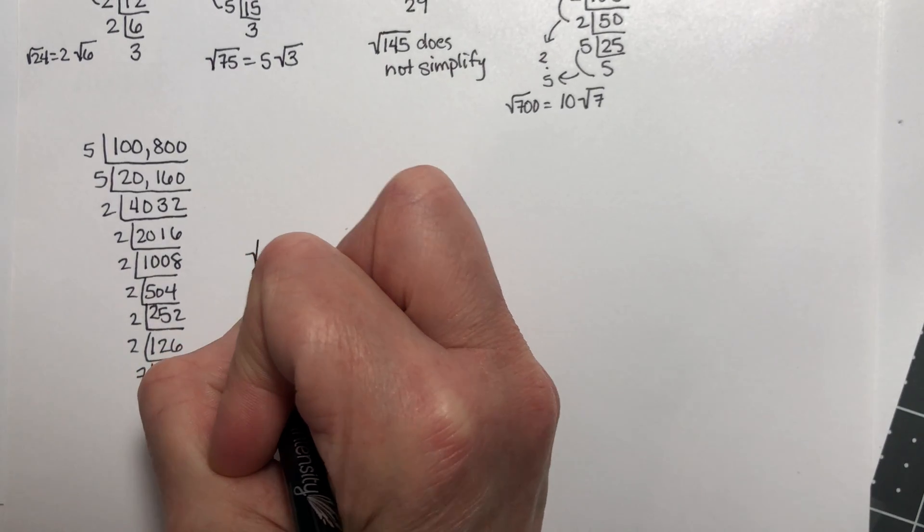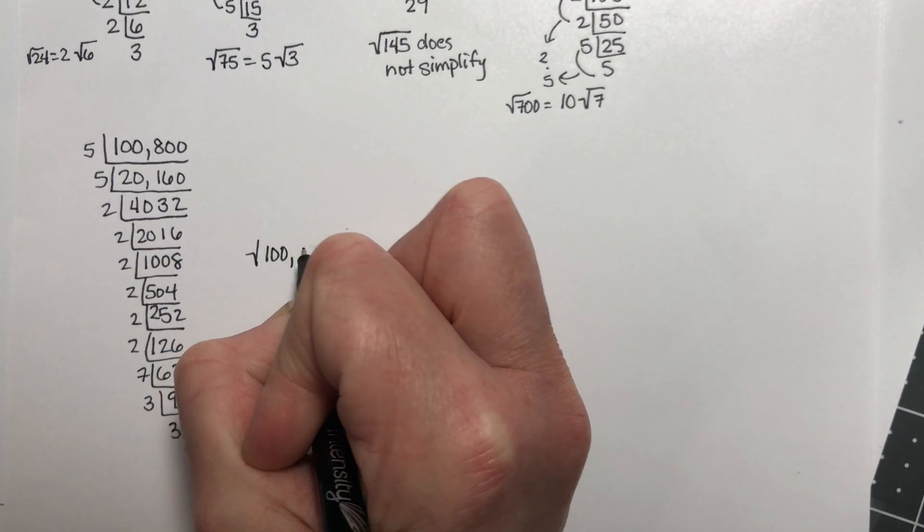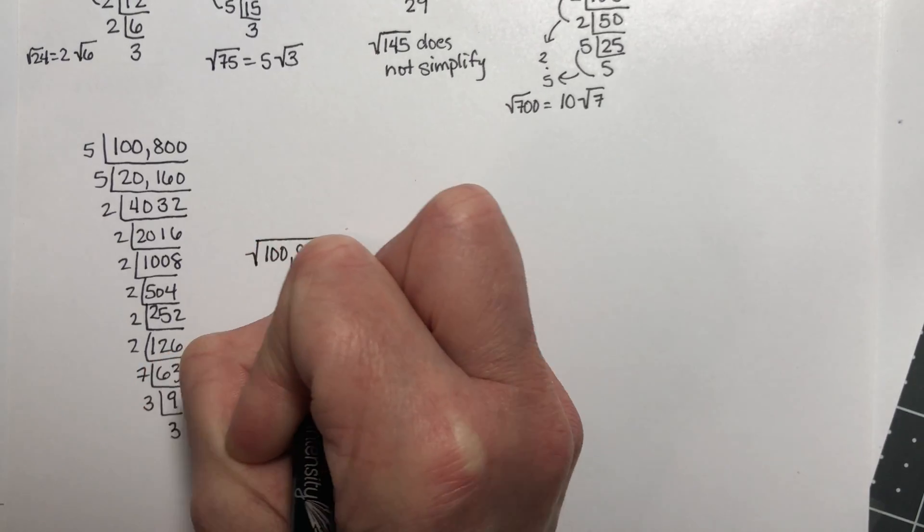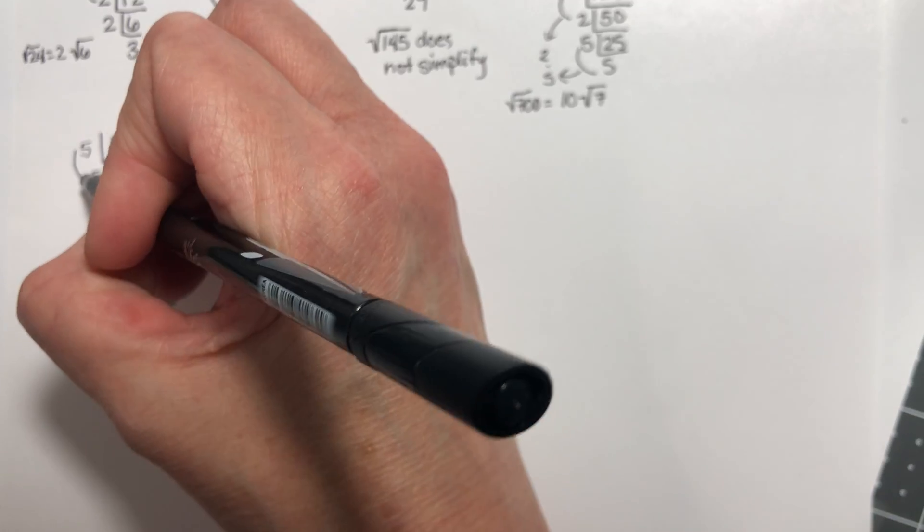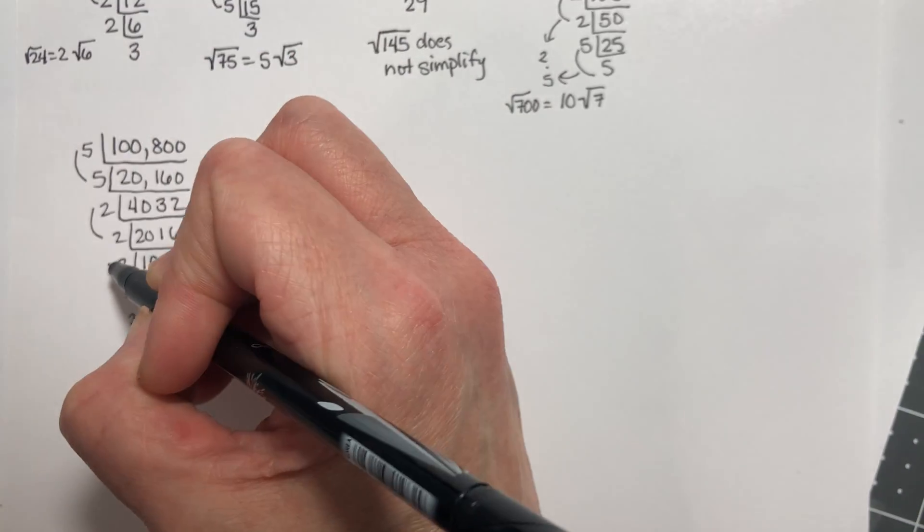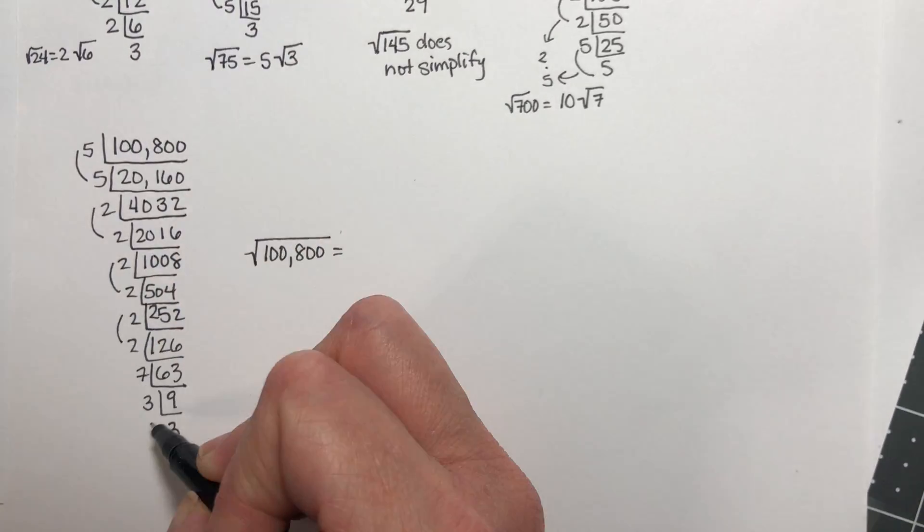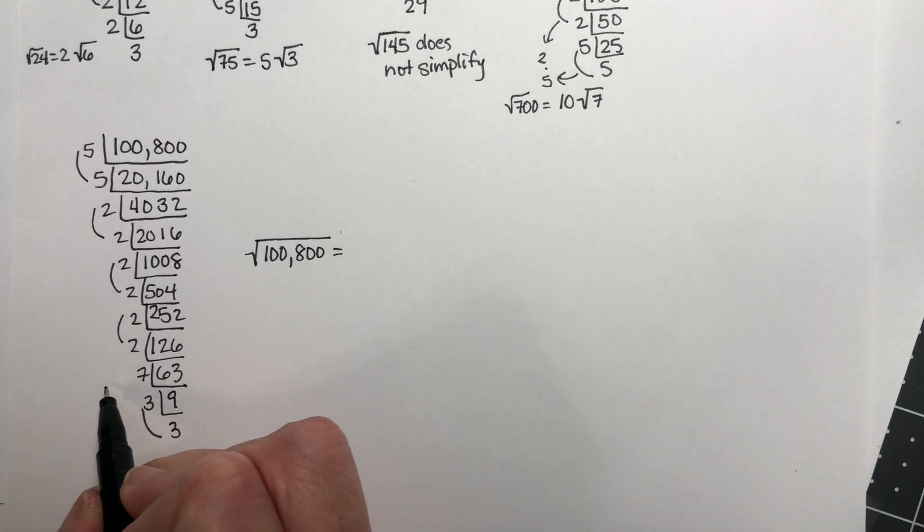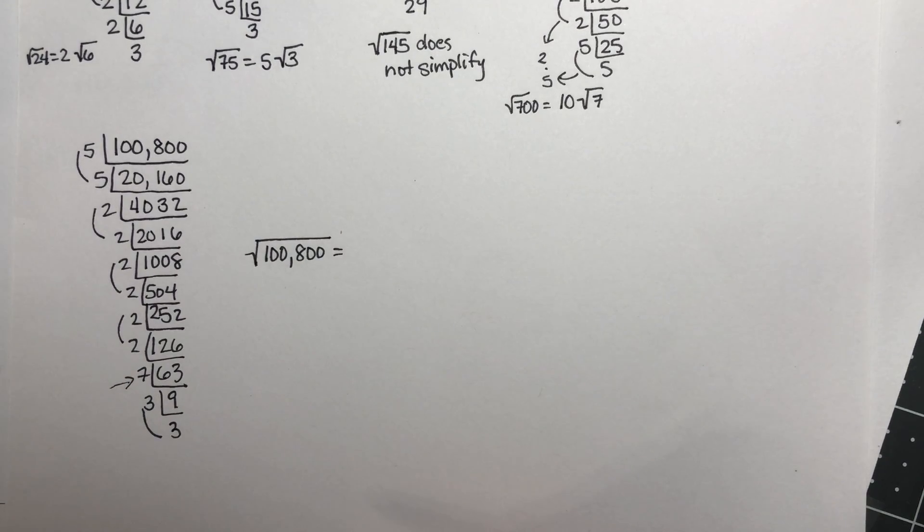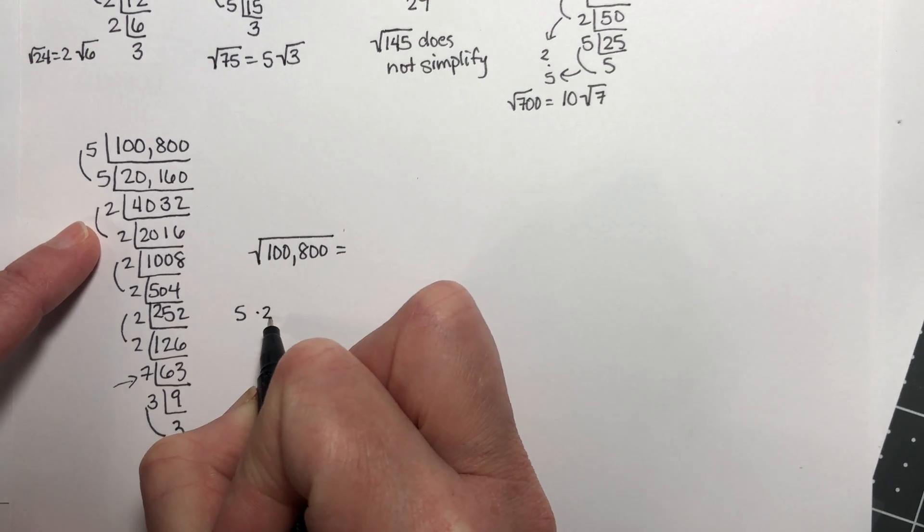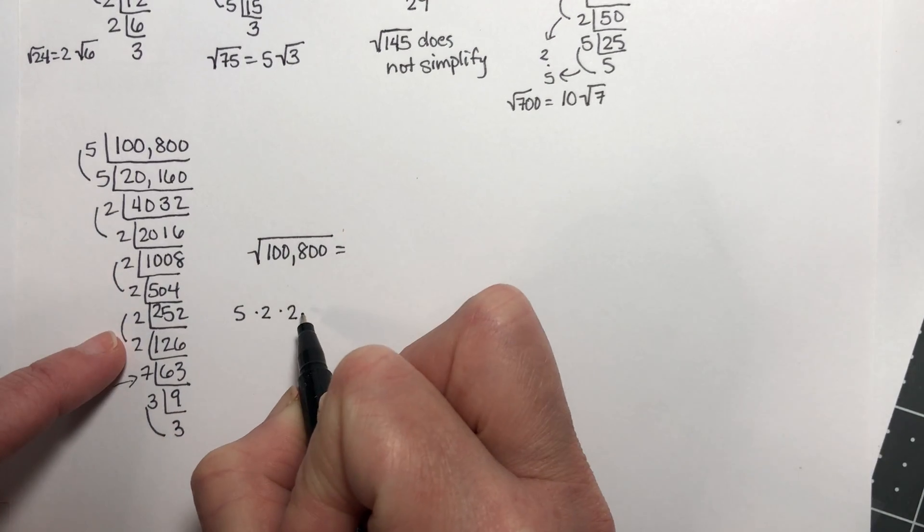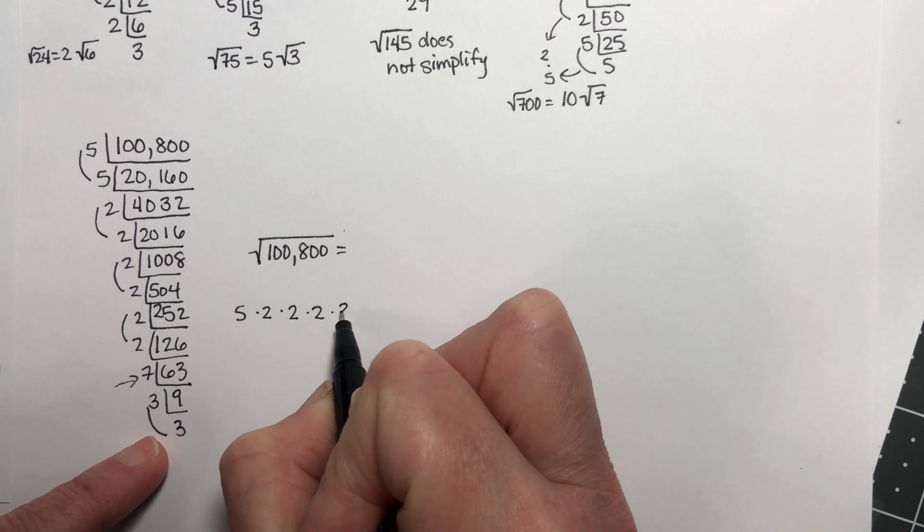Let's see what the square root of 100,800 is going to equal. I'm looking for square root, so look for pairs. That's a pair, pair, pair, pair, and a pair. The only thing that's left inside is the 7. That's the only thing that didn't have a pair. So I'm going to have to figure out 5 times 2 times 2 times 2 times 3. For every pair, one of them comes out.